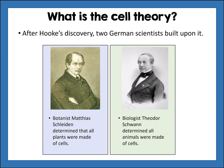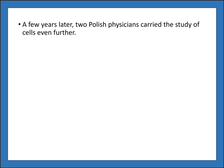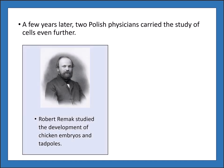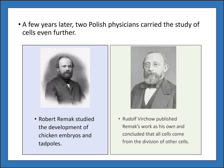A few years later, two Polish physicians carried the study of cells even further. Robert Remak studied the development of chicken embryos and tadpoles. Rudolf Virchow then looked at Remak's work and published it as his own, receiving much of the credit. Virchow concluded that all cells come from the division of other cells.